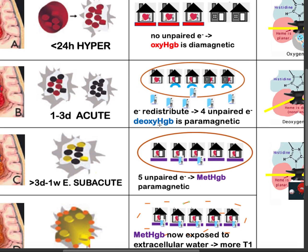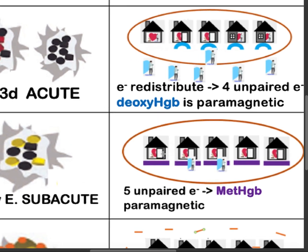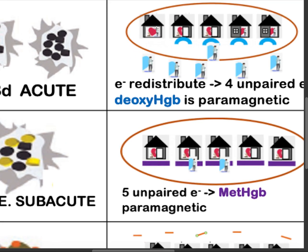When deoxyhemoglobin becomes methemoglobin by the process of oxidation, there will be a loss of one electron. So where we had two electrons in the first house, we now only have one. One, two, three, four, five electrons remain — all of them are unpaired — therefore methemoglobin is also paramagnetic.